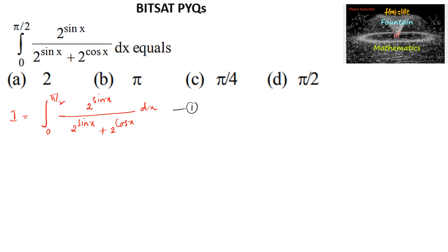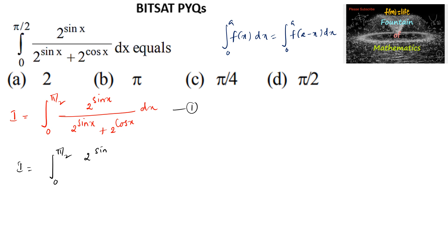Call this equation 1, and let us apply the property: integral from 0 to a of f(x) dx equals integral from 0 to a of f(a minus x) dx. So we write I equal to integral from 0 to π/2 of 2^(sin(π/2 minus x)) divided by (2^(sin(π/2 minus x)) plus 2^(cos(π/2 minus x))) dx.